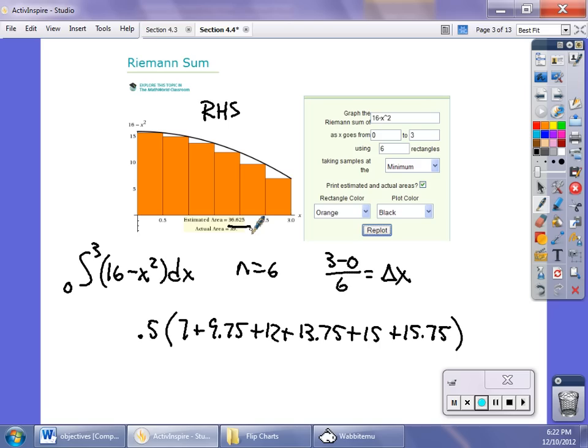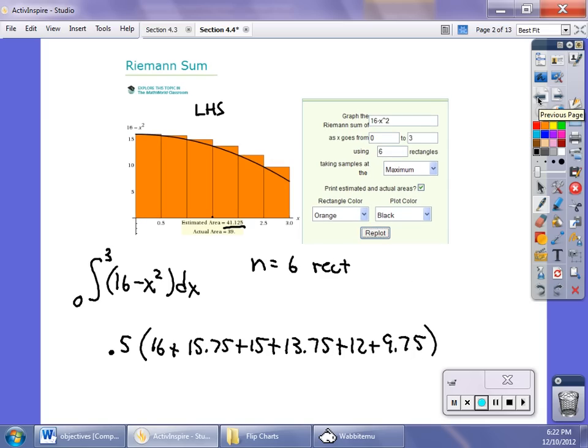Notice that's a little bit of an underestimate. They calculated out the real value of this integral is 39. That's a little bit of an underestimate. This one was a little bit of an overestimate. So then what they did was they said, okay, well, if we divide it up into more rectangles, our approximation will be better.